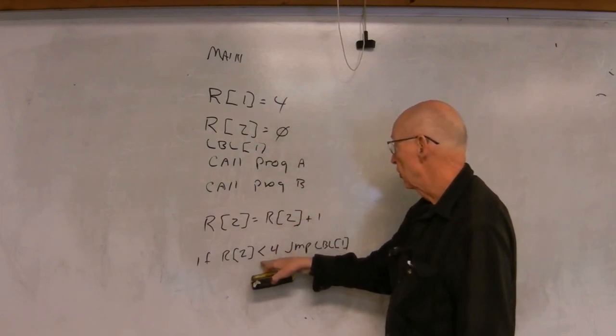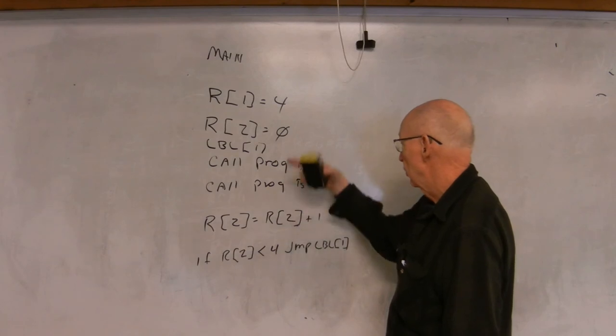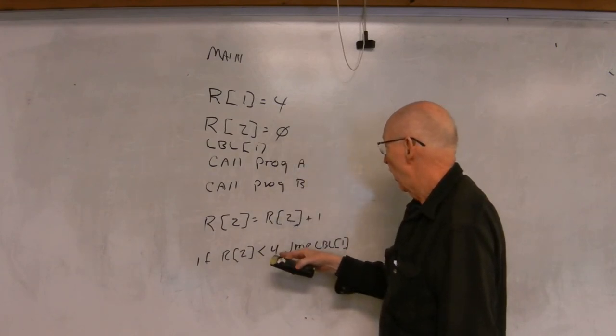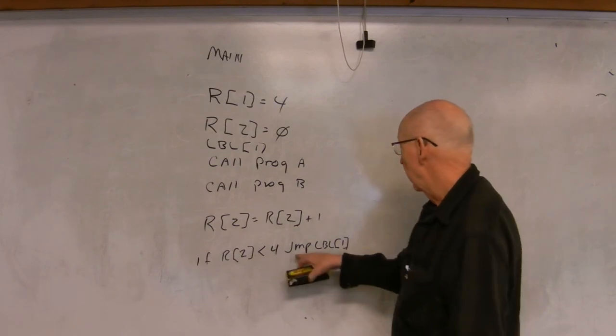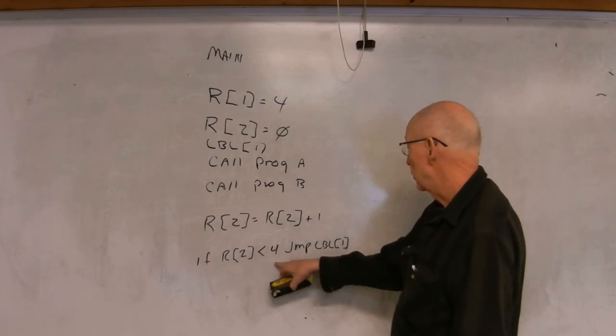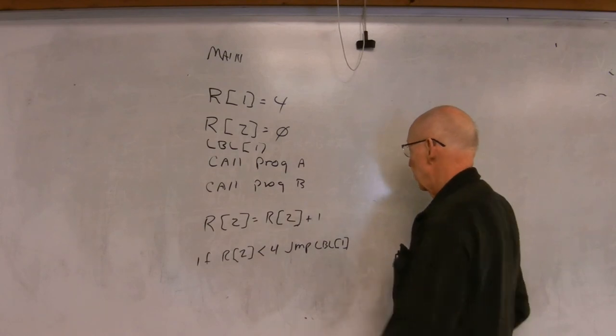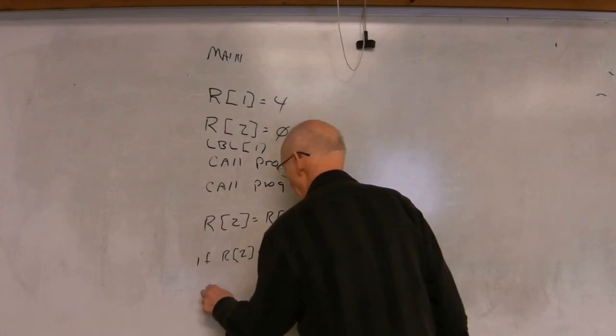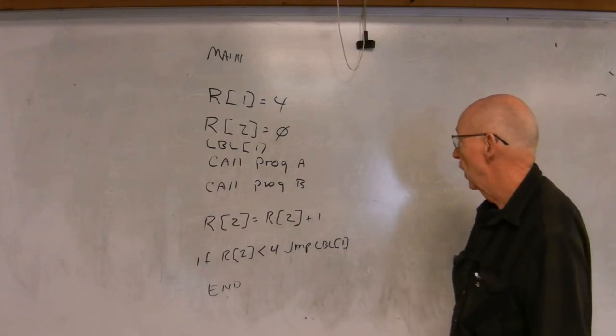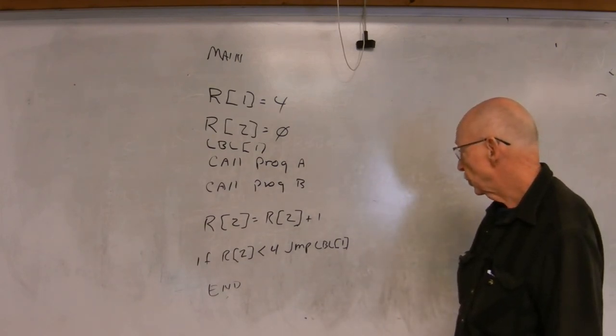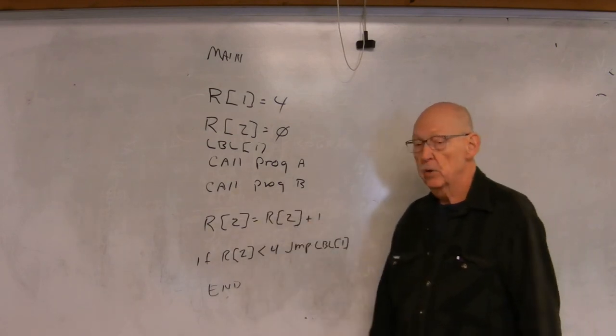If it's false, let's say we go through a number of loops and the value of R2 now equals five. Well then this statement is false. It will not jump back to label one, and the program will end. So you can test the value of a data register.